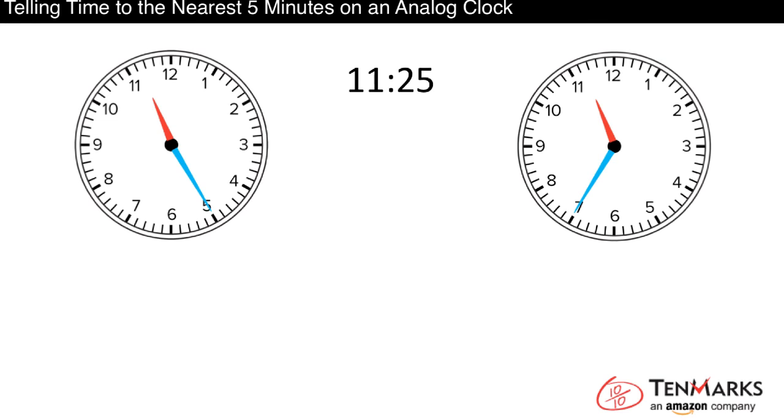Let's check the minutes on the two clocks that are left. Remember that the minute hand is the long one. On the first clock, the minute hand points to the 5. Skip counting by fives starting at the 12, we see that the minutes are 5, 10, 15, 20, 25. So this clock shows 11:25. It's correct.